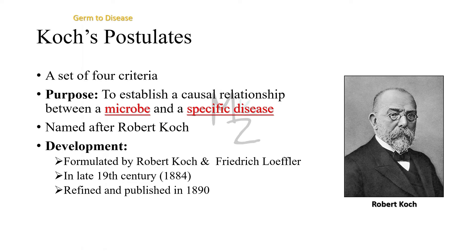Koch's postulates were developed to explain the germ-to-disease concept. It is a set of four criteria and its purpose is to establish a causal relationship between a microbe and a specific disease — the microbe being responsible for causing the specific disease, and the disease being caused by a specific microbe. It was named after Robert Koch, who was working on anthrax in Germany because of his love for bacteriology.